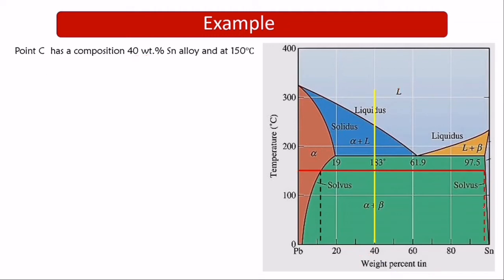Now we apply the lever rule to find the mass fraction. Wherever they ask for mass fraction, and the composition and temperature fall between two phases, you apply the lever rule. If it is a single phase, the mass fraction is one — or 100%. The bulk composition C₀ is 40 weight percent tin, with Cα = 11 and Cβ = 97.